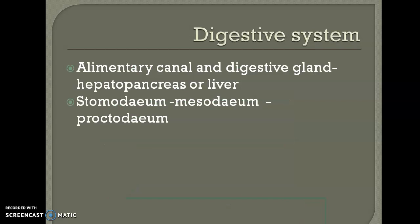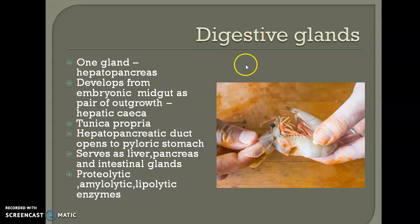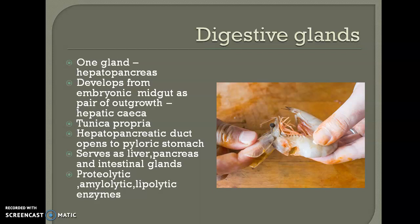Looking at the figure, the hepatopancreas covers the posterior, lateral, and ventral parts of the stomach. It develops from the embryonic midgut as a pair of outgrowths called hepatic caeca. It has numerous branching tubules connected by connective tissue called the tunica propria. Leading from each lobe of the hepatopancreas is the hepatopancreatic duct, which opens to the hind part of the pyloric stomach. There are numerous compartments in the branching tubules, and all these open into the pyloric stomach. It serves as a liver, pancreas, and intestinal gland.